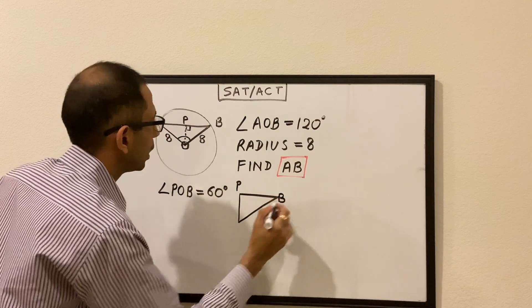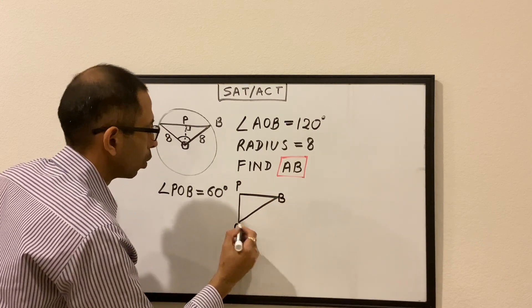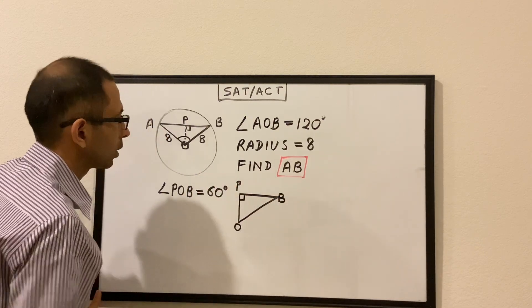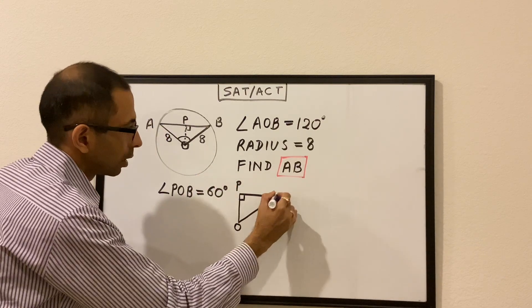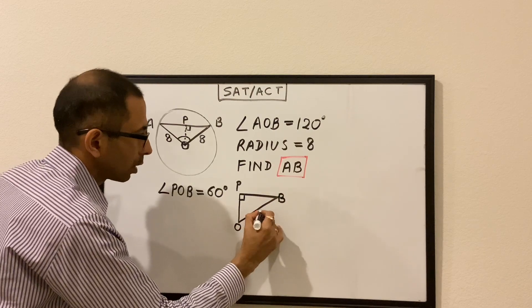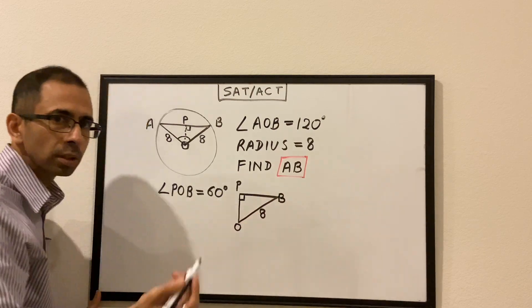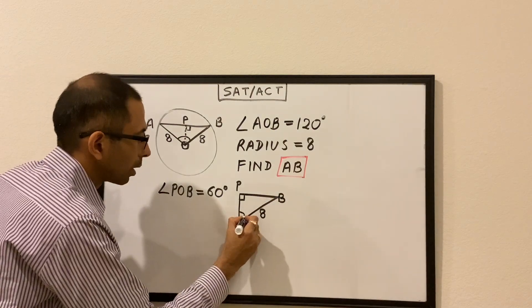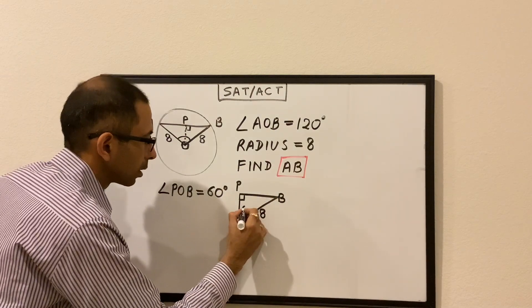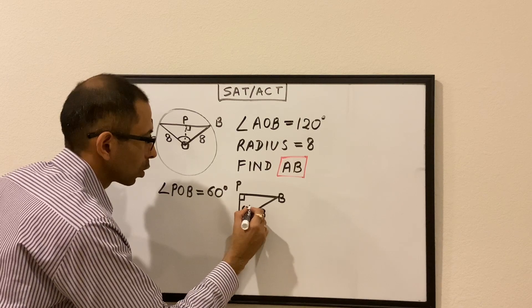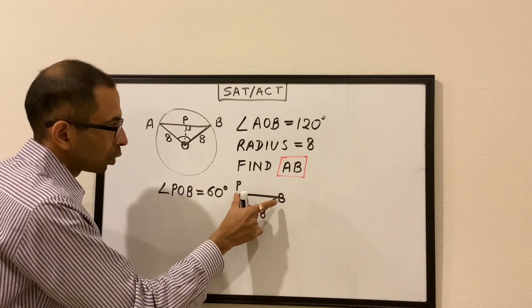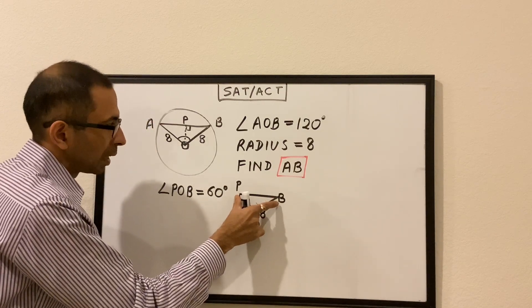Looking at this right triangle with vertices P, B, and O: this angle is 90 degrees, this length OB is 8 because it's the radius of the circle, and this angle is 60 degrees. All we have to do is find the length of PB.